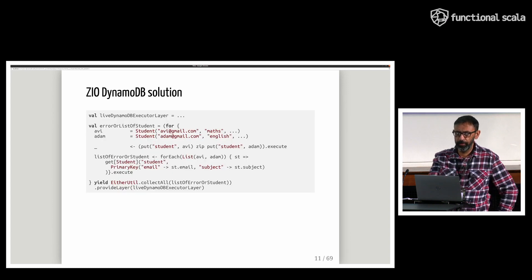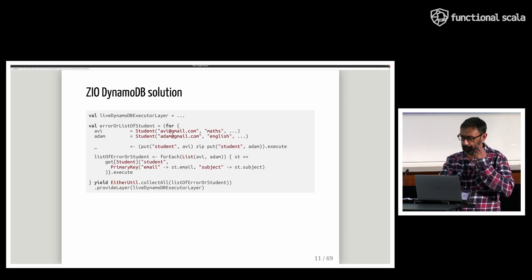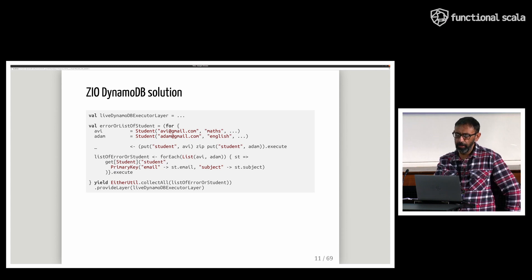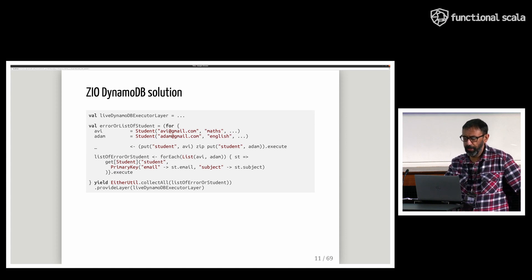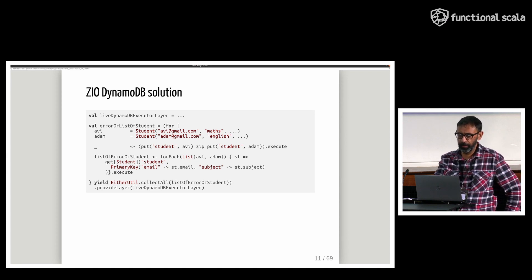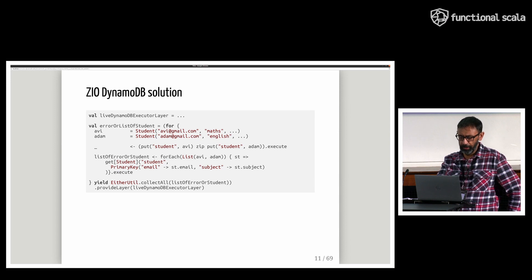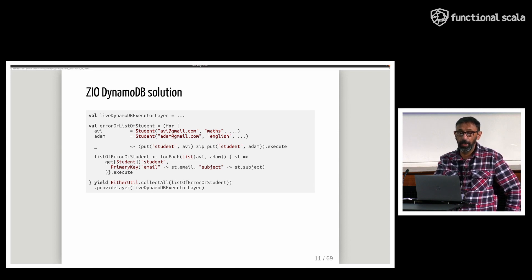This is where we got up to in last year's presentation. It's a huge reduction in boilerplate, and the library takes care of thorny issues such as Java and SDK interop. It has composable queries that automate batching and do auto-parallelization for queries that can't be batched. Next, we're going to take a tour of how we got here and what was missing.